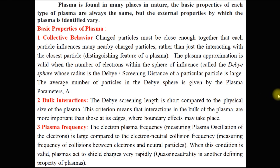If we want to inject external charge into the plasma, plasma tends to nullify its effect immediately. An equal amount of opposite charge tends to shield the injected external charge and form a sphere inside which the external charge can affect. This effect is known as collective behavior, and this sphere is known as the Debye sphere, and its radius is called the Debye length or screening distance. This happens immediately in order to maintain total charge neutrality in a large volume of plasma.